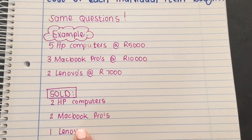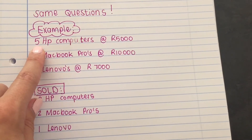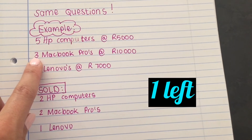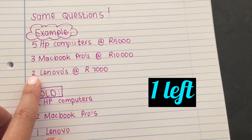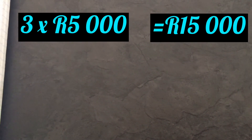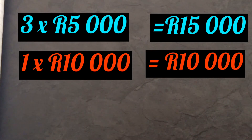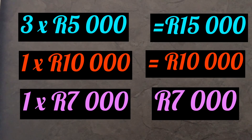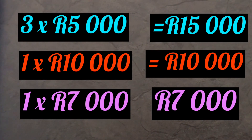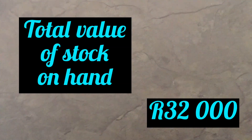In total I sold five. I sold two HPs, so there are three left. I sold two Macs, so there's one left. I sold one Lenovo, so there's also one left. Three HPs at 5,000 each gives me 15,000 Rand. One Mac at 10,000 Rand gives me 10,000 Rand. One Lenovo at 7,000 Rand. Adding everything together, the total number of computers left is five and the total value is 32,000 Rand.